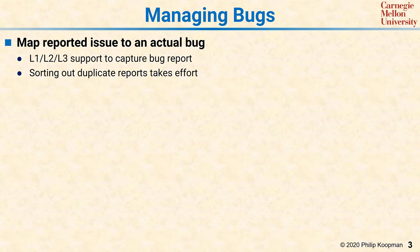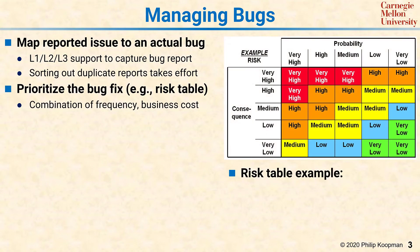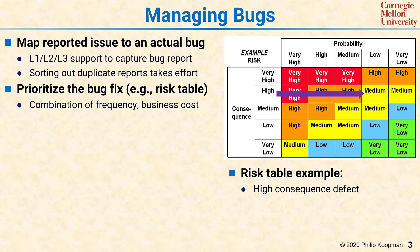Once a bug has been reported, it has to be prioritized. Not all bugs are born equal. Some are system killers, some are minor inconveniences, and some are things the software is not intended to do and end up really being a feature request. Prioritizing the bug should be done using a combination of frequency and business cost. A good way to do that is to use a risk table. In a risk table, the consequence severity goes by row and the probability goes by column.